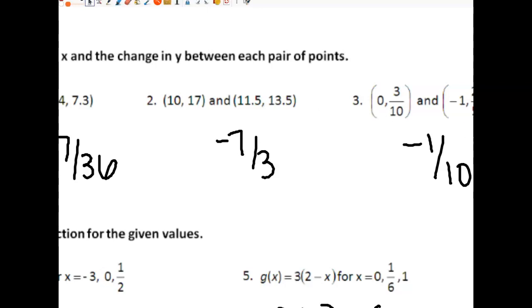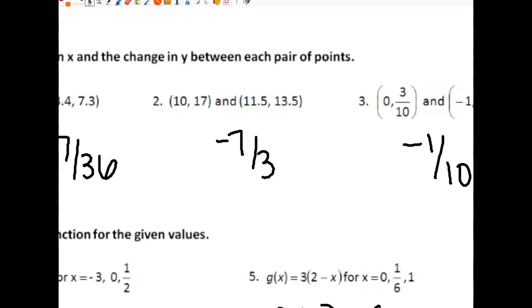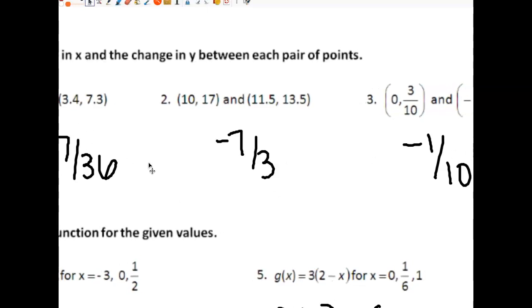So the slope to the first three problems on your page are as follows: negative 17 over 36, negative 7 thirds, and negative 1 over 10.